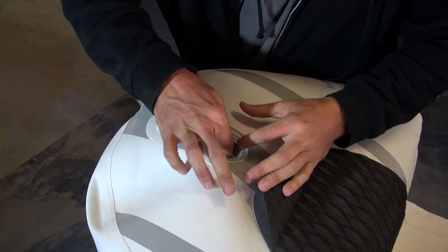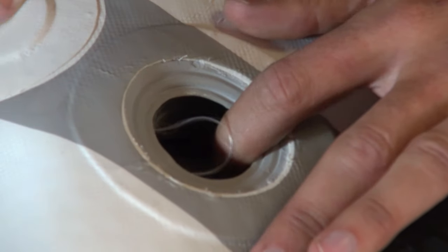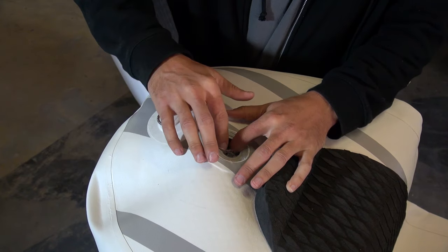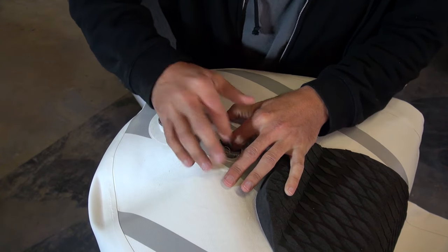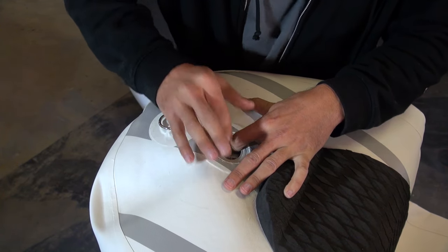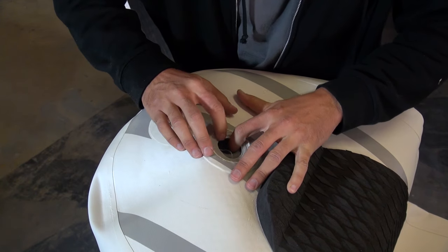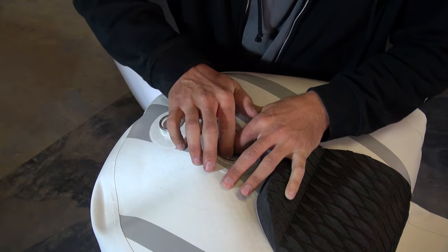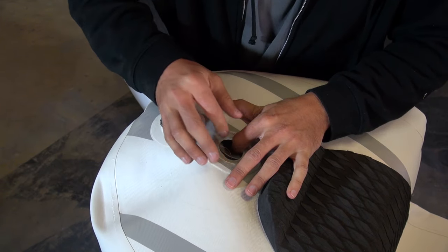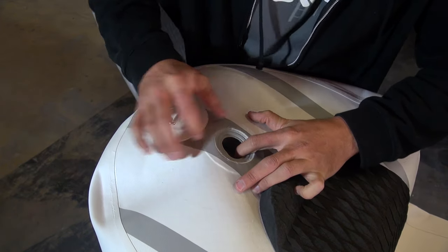So you can see these little hairs right here. This is the drop stitch material. You don't want that sticking out. You want to get that behind the valve. So I'm going to pull the valve over, push that hair down in there, back in the board, push the valve back. There we go.